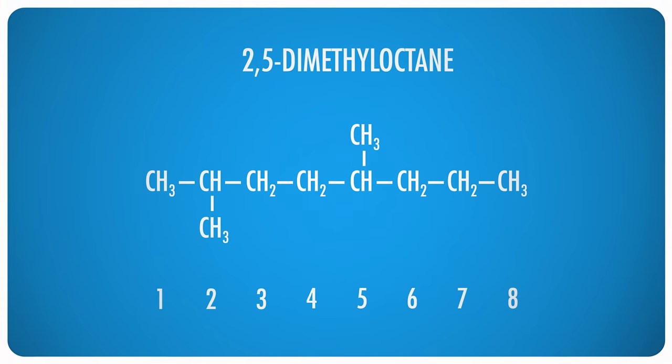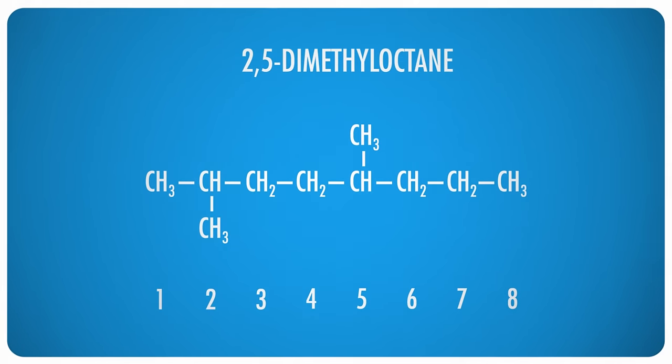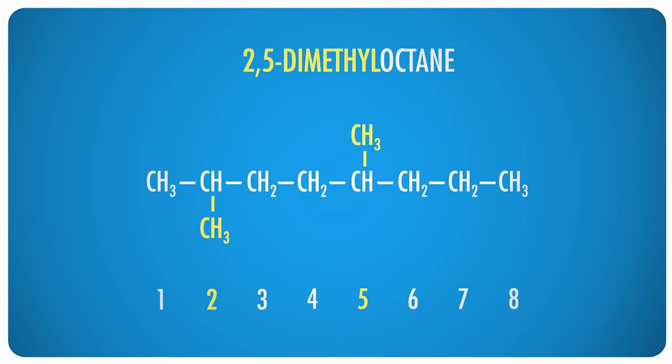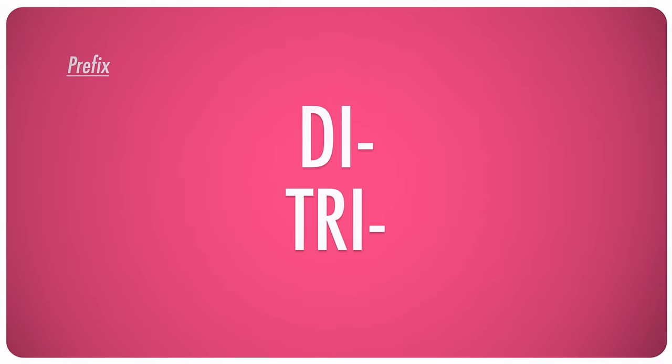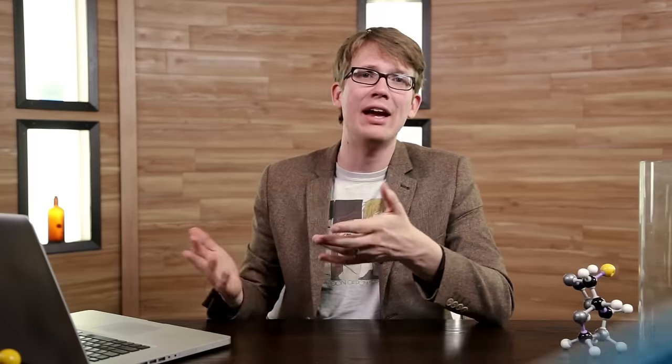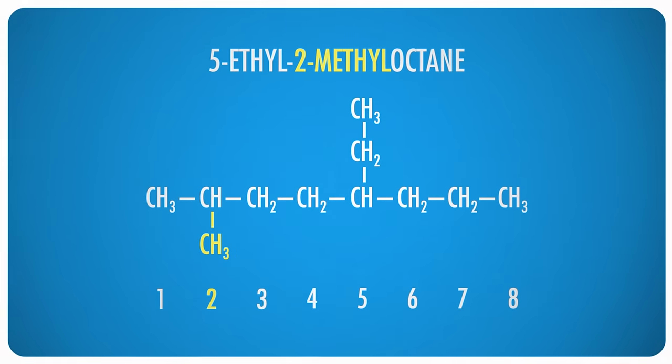Now suppose you have more than one of the same size group attached to the same chain, like two methyl groups on the same alkane. In this case, you put a number for both of them, and prefixes like di and tri are used to indicate multiple attachments. So if an octane chain has methyl groups attached to its second and fifth carbons, it's called 2,5-dimethyloctane. On the other hand, if you have attachments of different lengths, you name and number each one separately, listing them in alphabetical order. So if the structure had a methyl group on its second carbon and an ethyl group on its fifth, it would be 5-ethyl-2-methyloctane.